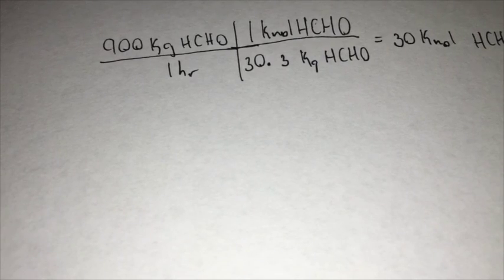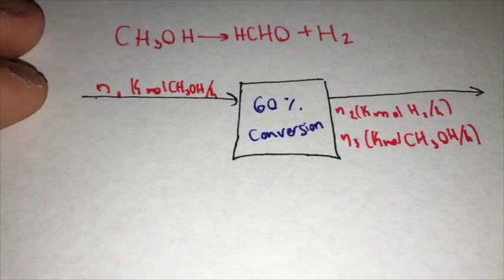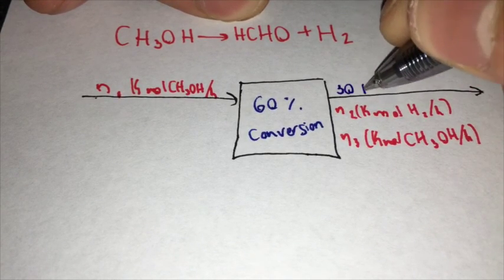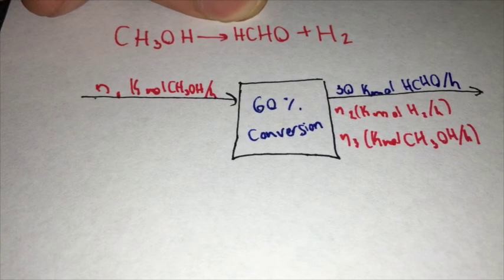And we can add that 30 to our flowchart right here. So we have 30 kilomoles of HCHO per hour going out.